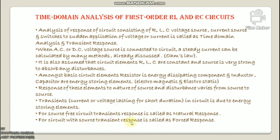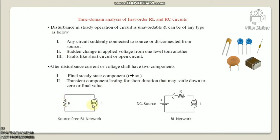Here is a source-free RL network, and this is a with-source RL network. Disturbance in steady operation of a circuit can be of any type: number one, any circuit suddenly connected to or disconnected from a source; number two, a sudden change in applied voltage from one level to another; number three, faults like short circuit or open circuit. After a disturbance, current or voltage shall have two components: number one, a final steady-state component when T tends to infinity; and number two, a transient component lasting for a short duration that may settle down to zero or a final value.